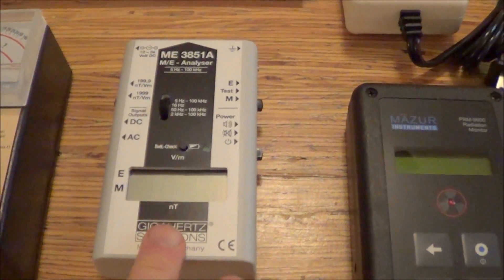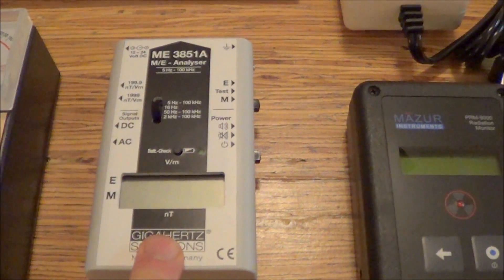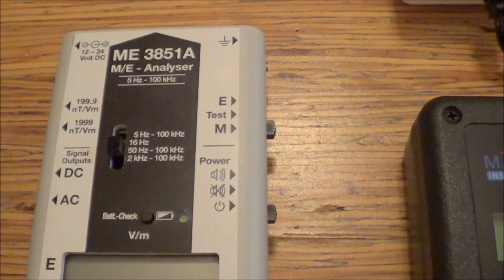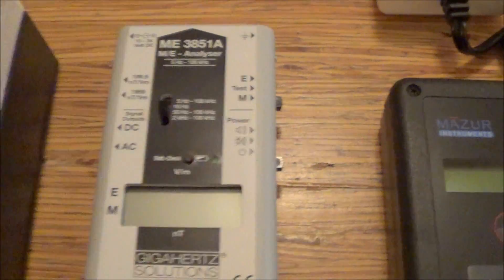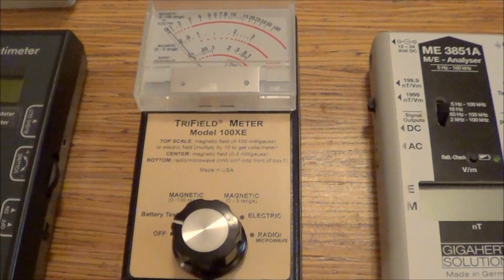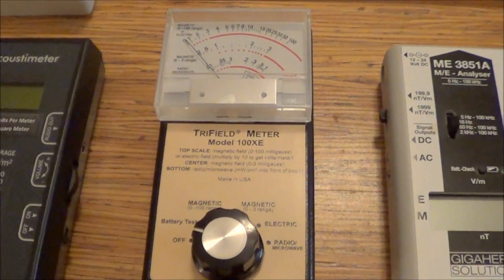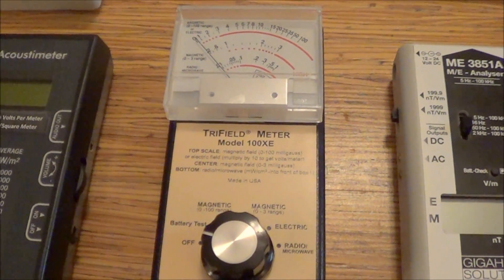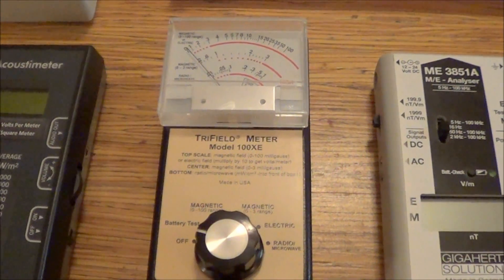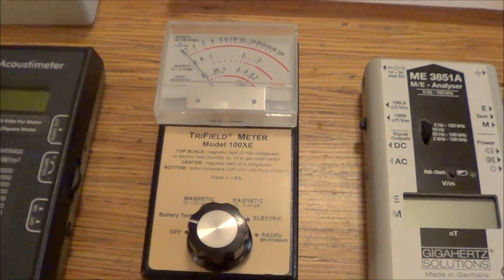The gigahertz solutions meter is a meter that measures electric and magnetic fields. All right, extreme low frequency. The tri-field meter, it does have a setting for electric fields. I don't think it's terribly sensitive, but it's best used for measuring magnetic fields.